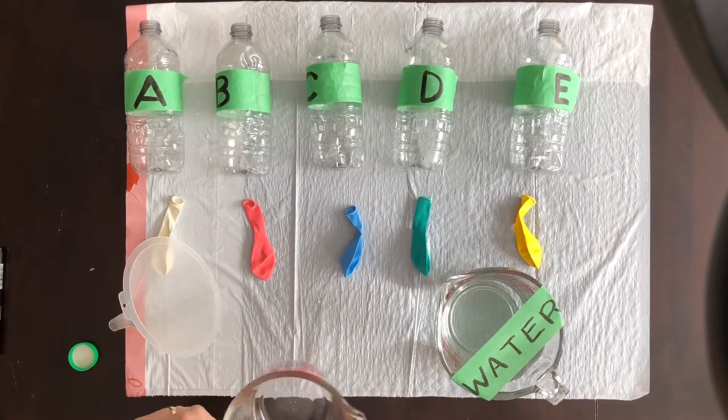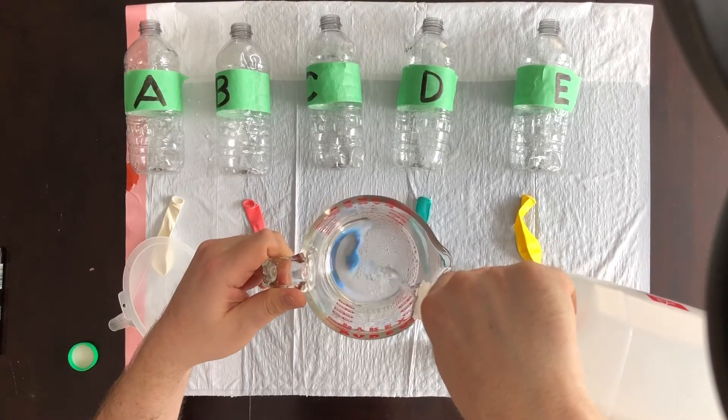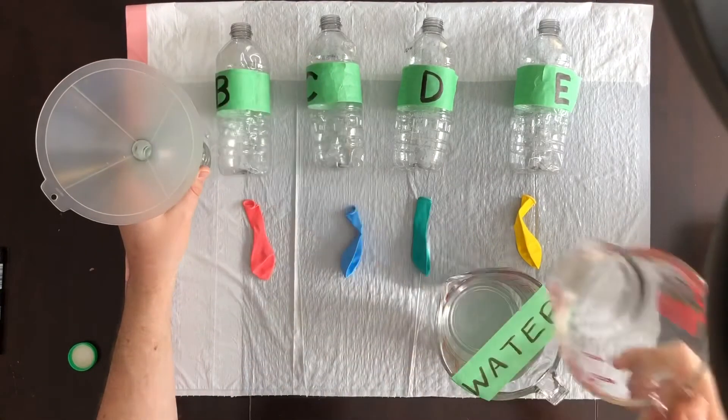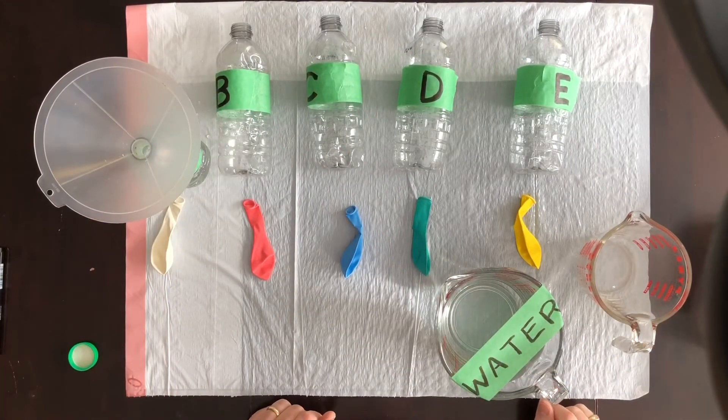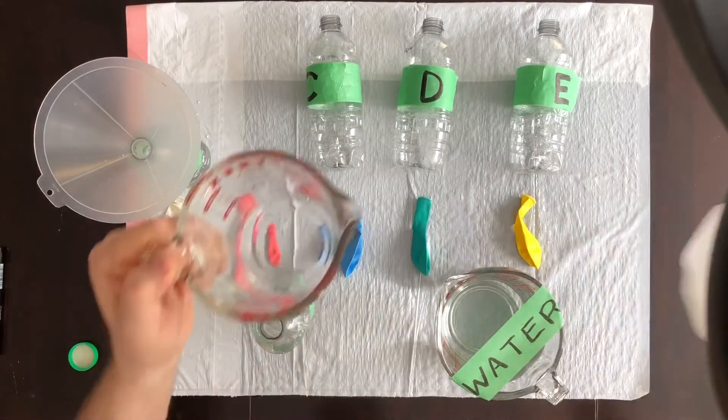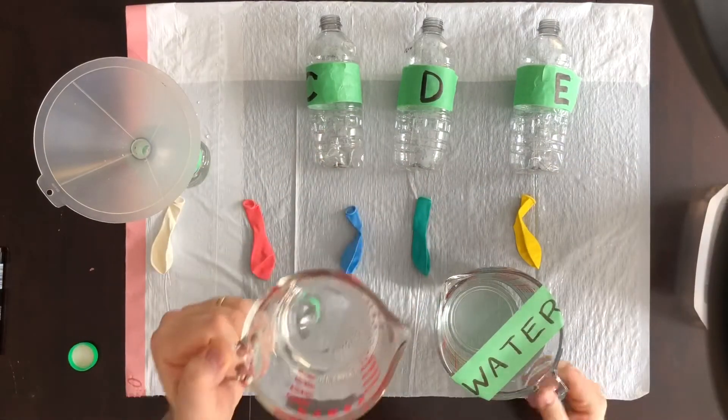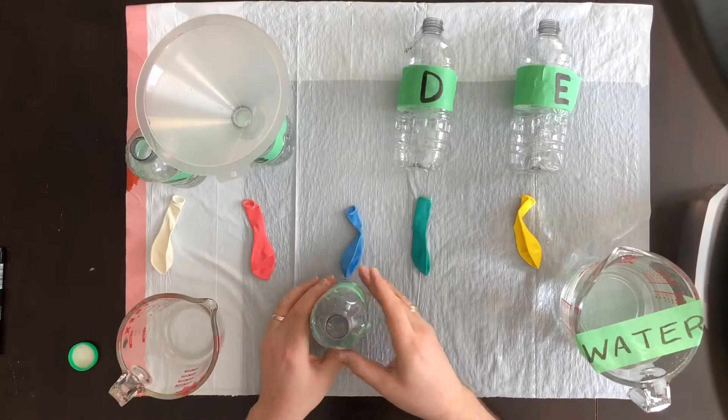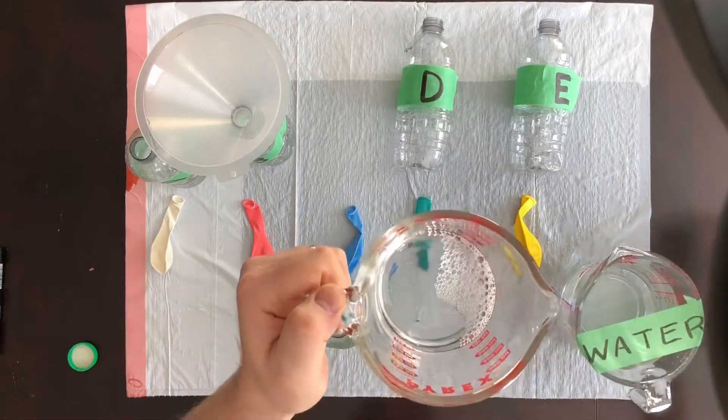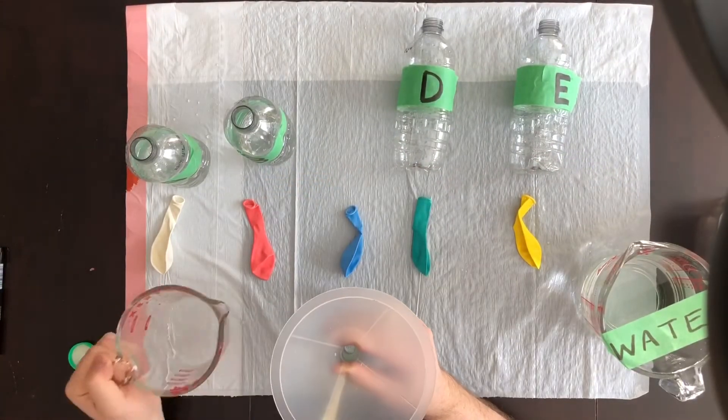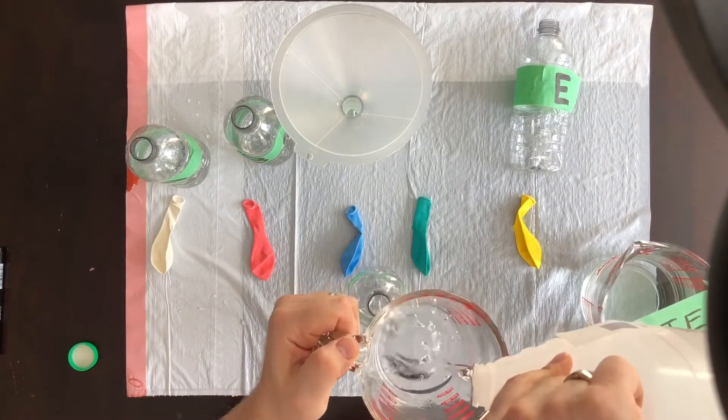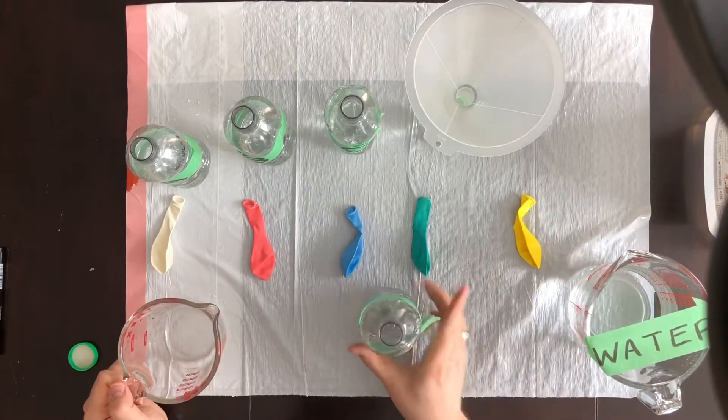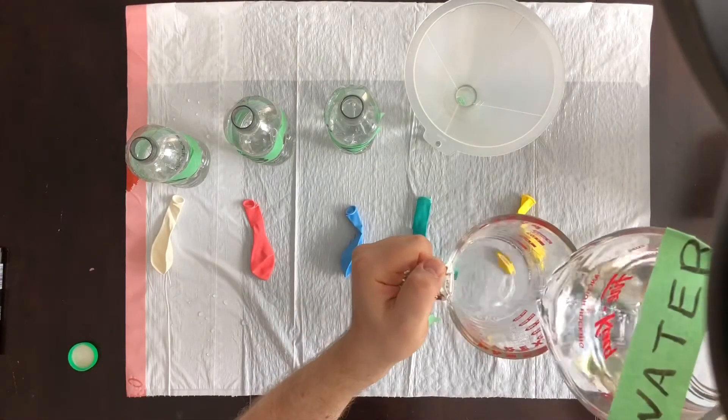This time, we're changing the amount of vinegar in each bottle. Bottle A gets 250 milliliters of vinegar, just like all the bottles did in part one. Bottle B gets only 200 mils of vinegar. To keep the overall amounts the same, we'll top it up with water, so there's still 250 mils of liquid in total in the bottle. Bottle C gets 150 mils of vinegar plus 100 mils of water. Bottle D gets 100 mils of vinegar plus 150 mils of water. There's more water in bottle D than there is vinegar. Finally, bottle E contains mostly water, with only 50 milliliters of vinegar.